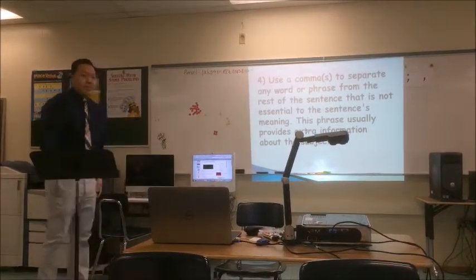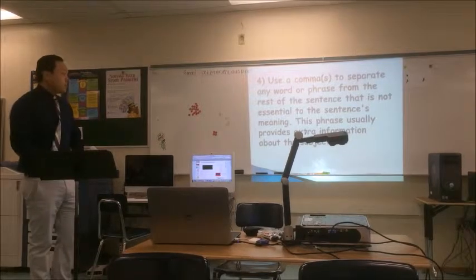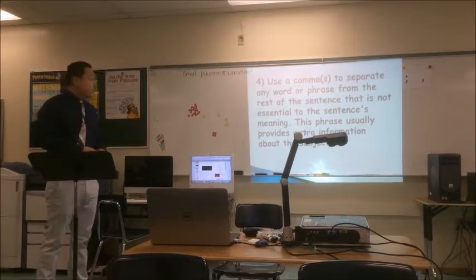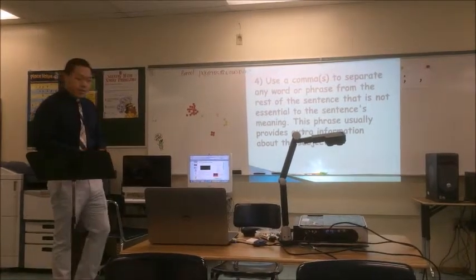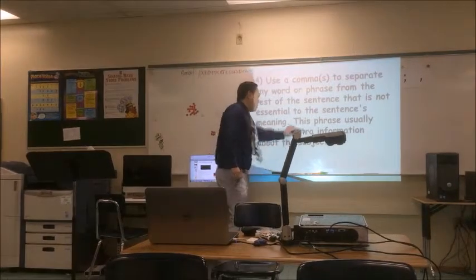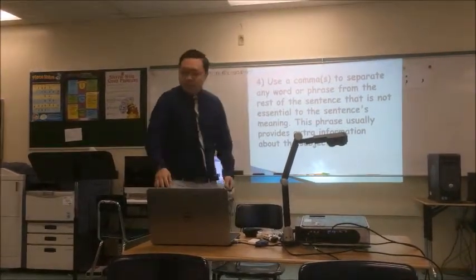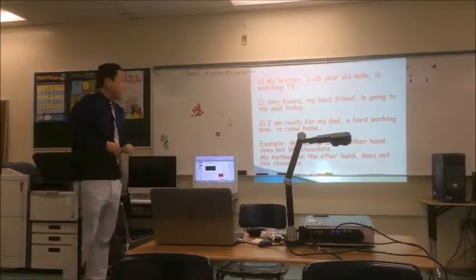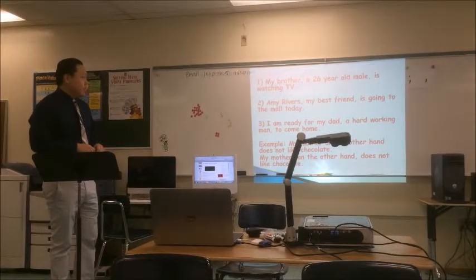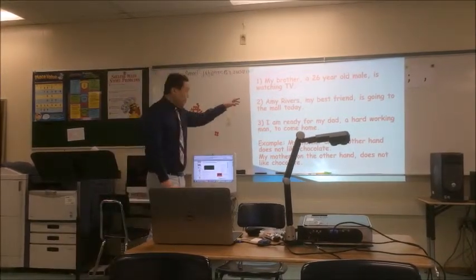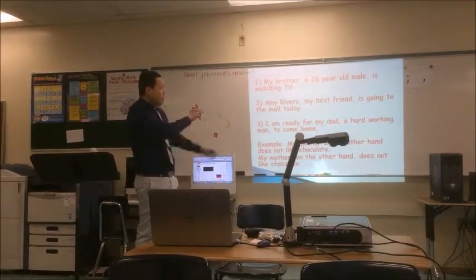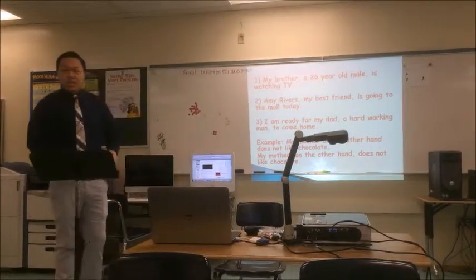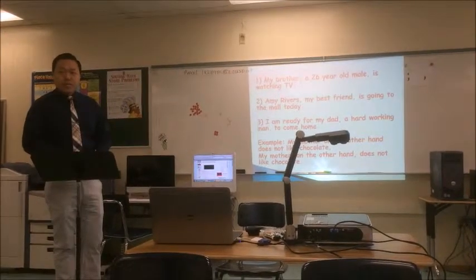Can someone read the fourth rule, please? Use a comma to separate any word or phrase from the rest of the sentence that is not essential to the sentence meaning. This phrase usually provides extra information about the subject. For example: My brother, a 26-year-old male, is watching TV. You see how the comma comes after 'brother' and after 'male'? Why? Because it's a detail about my brother — without it, it would still be a complete sentence.